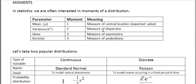Mean measures central location, variance measures dispersion, skew symmetry and kurtosis measures peakness.